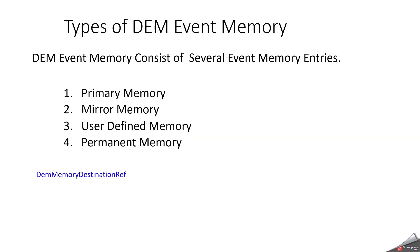Types of DEM Event Memory: DEM Event Memory consists of several event memory entries — primary memory, mirror memory, user defined memory, and permanent memory. This is decided by the Autosar configuration parameter called DEM Memory Destination Reference. Based on your project and requirement, these memory types will be used. In some projects mirror memory may not be needed, but primary memory is used in most projects.